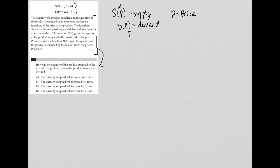It says the functions above are the estimated supply and demand functions for a certain product. So S of P equals one-half P plus 40, and D of P, the demand function based upon price, is 220 minus P.